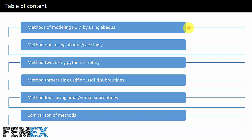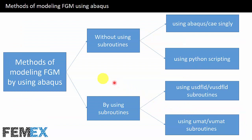This is the table of content of this video. First I talk about the methods of modeling FGM by using Abaqus. After it I talk about method one, that is using Abaqus CAE singly. Then I talk about method two, that is using Python scripting. Then I talk about method three, that is using USDFLD or VUSDFLD subroutines. After it I talk about method four, that is using UMAT or VUMAT subroutines. And finally I talk about comparison of methods.